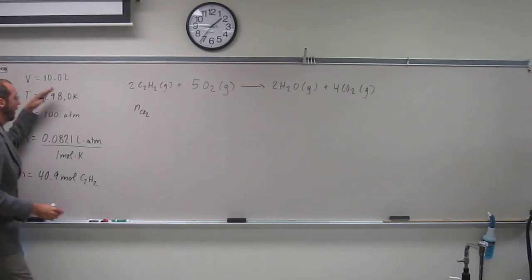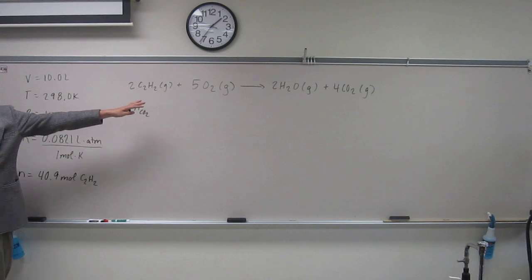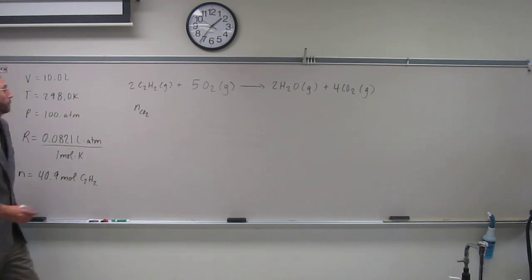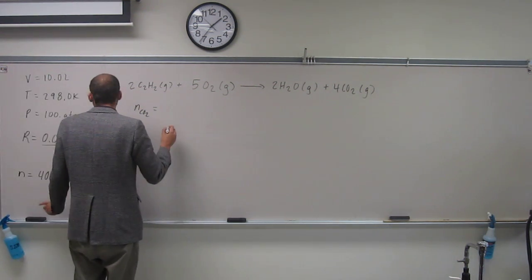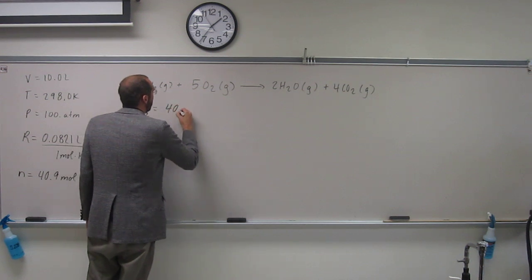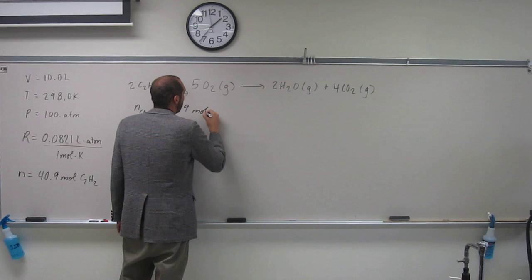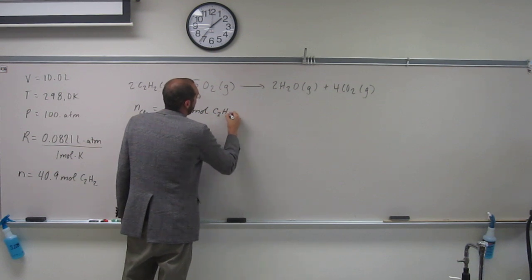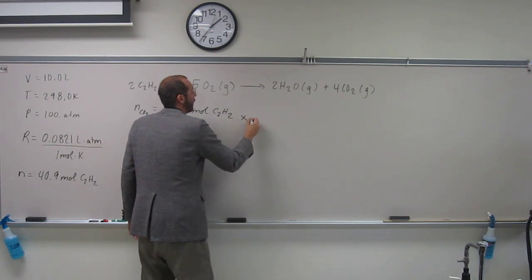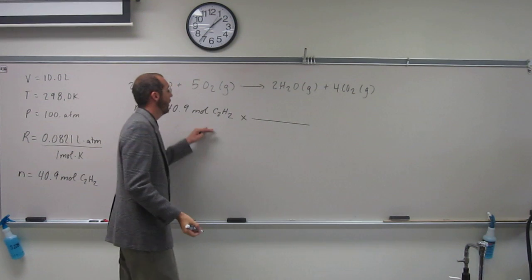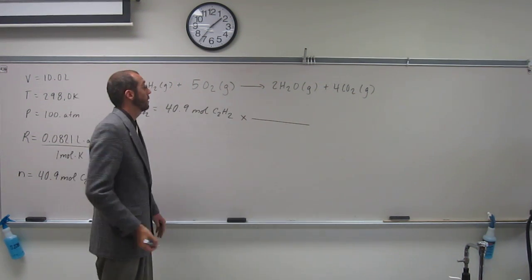So now, not only have we used the PV equals nRT, now we're going to integrate that with the chemical equation. The number of moles of carbon dioxide is going to equal the number of moles of acetylene, and then you've got to convert that from using the values on the chemical equation.